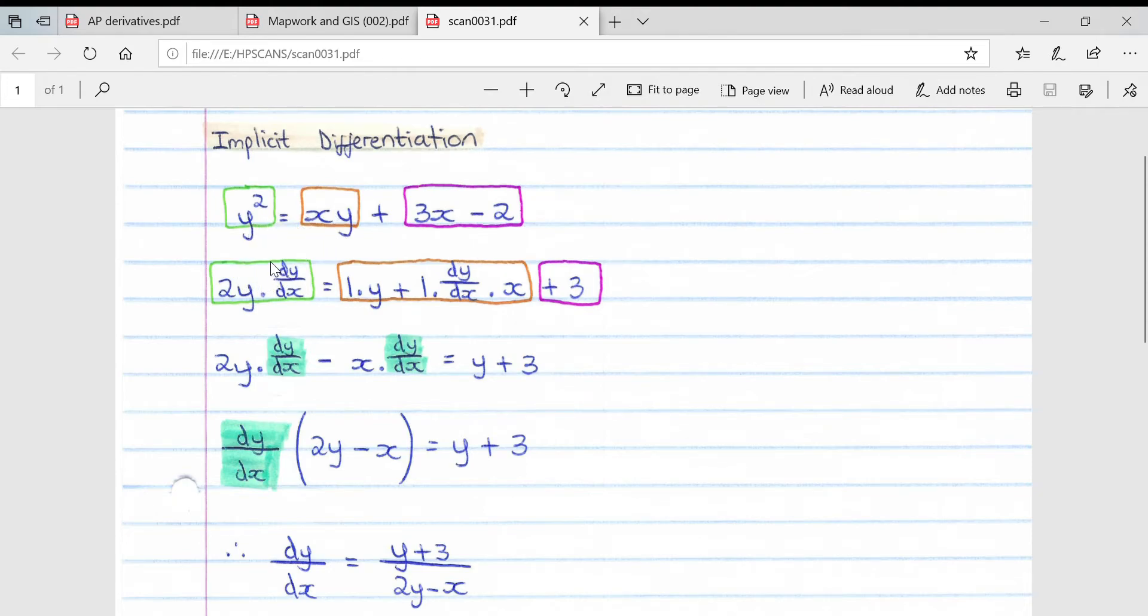Essentially what this means is that every time you differentiate y, you multiply by dy over dx because you're differentiating terms of y. So we pop the two down, we get 2y multiplied by dy over dx because we are deriving a y term.